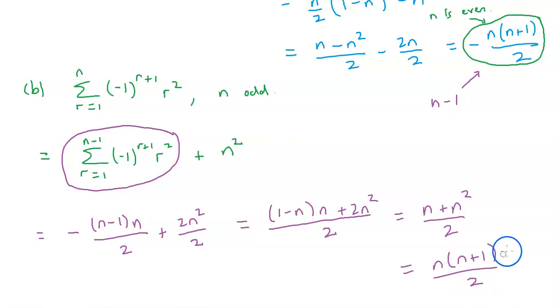That's pretty interesting because we know that's the same as the sum from r equals 1 to n of r. So that's telling us that if n is an odd number, then this formula here is actually equal to that sum there, the sum from r equals 1 to n of r.